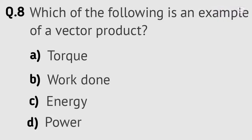Question 8. Which of the following is an example of a vector product? Options: A. Torque. B. Work done. C. Energy. D. Power. Right answer is A. Torque.